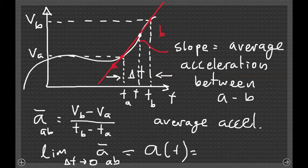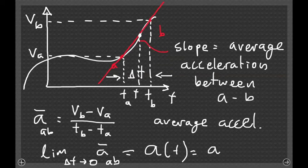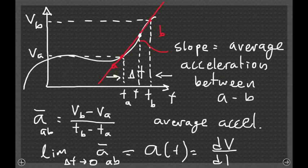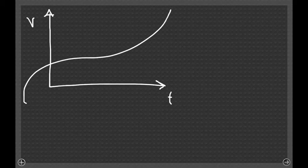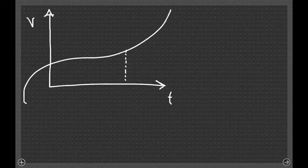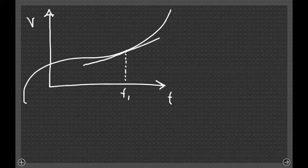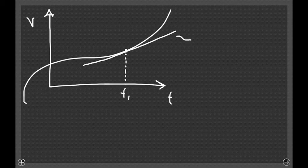Another way to write this limit is to say that the acceleration is the derivative of the velocity function. So for a general plot of velocity versus time, to figure out the instantaneous acceleration at any point in time, what you have to do is find the tangent line that touches the curve at that one point. The slope of that tangent line is the instantaneous acceleration.